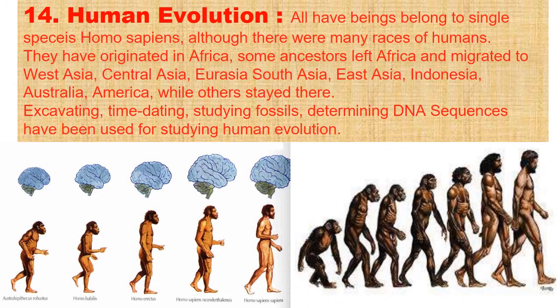Human evolution: All human beings belong to a single species, Homo sapiens, although there were many races of humans. They have originated in Africa. Some ancestors left Africa and migrated to West Asia, Central Asia, Eurasia, South Asia, East Asia, Indonesia, and Australia. Excavating, time dating, studying fossils, and determining DNA sequences have been used for studying human evolution.